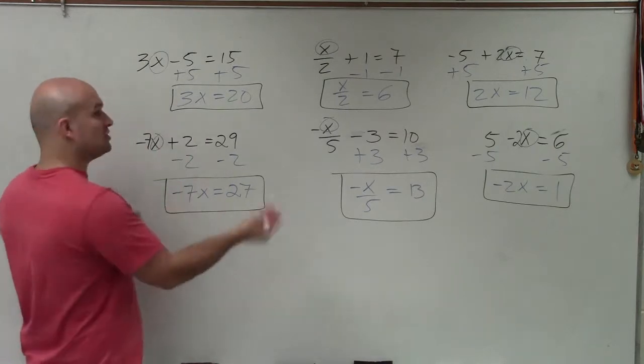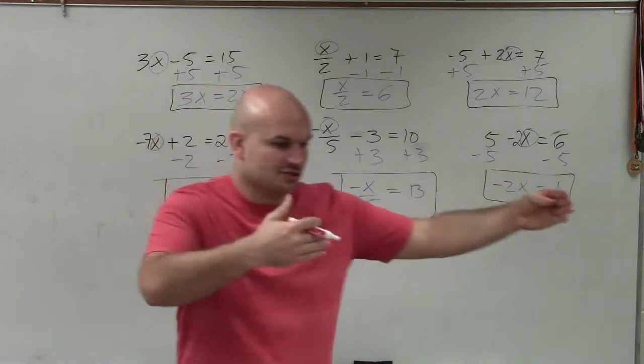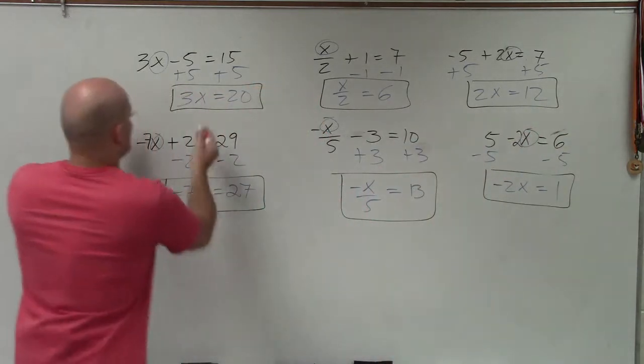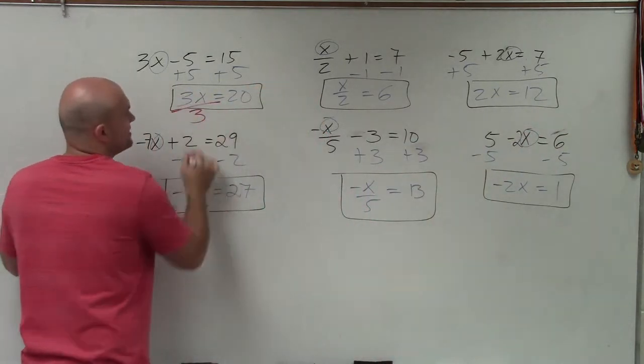In this case, my variable is being multiplied. So we undid addition and subtraction. The next thing is undo multiplication and division. So you can see here, my variable is being multiplied by 3, so I divide.